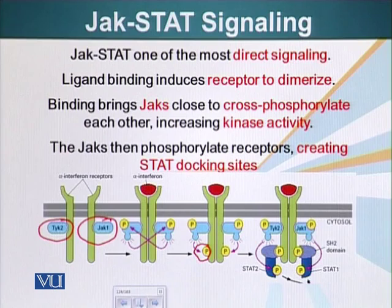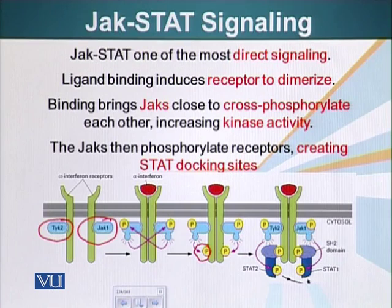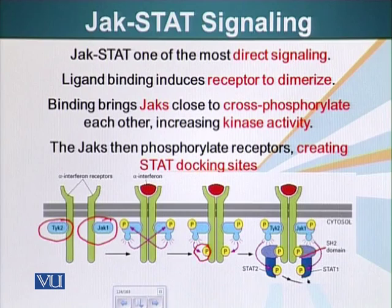There are several different types of STATs and several different types of JAKs. The phosphorylated receptor serves as a docking site for STAT proteins. These STAT proteins have a special domain called the SH2 domain. We have talked about the PH domain. The SH2 domain is a domain that recognizes a phosphorylated tyrosine residue, and these domains bind to that structure.